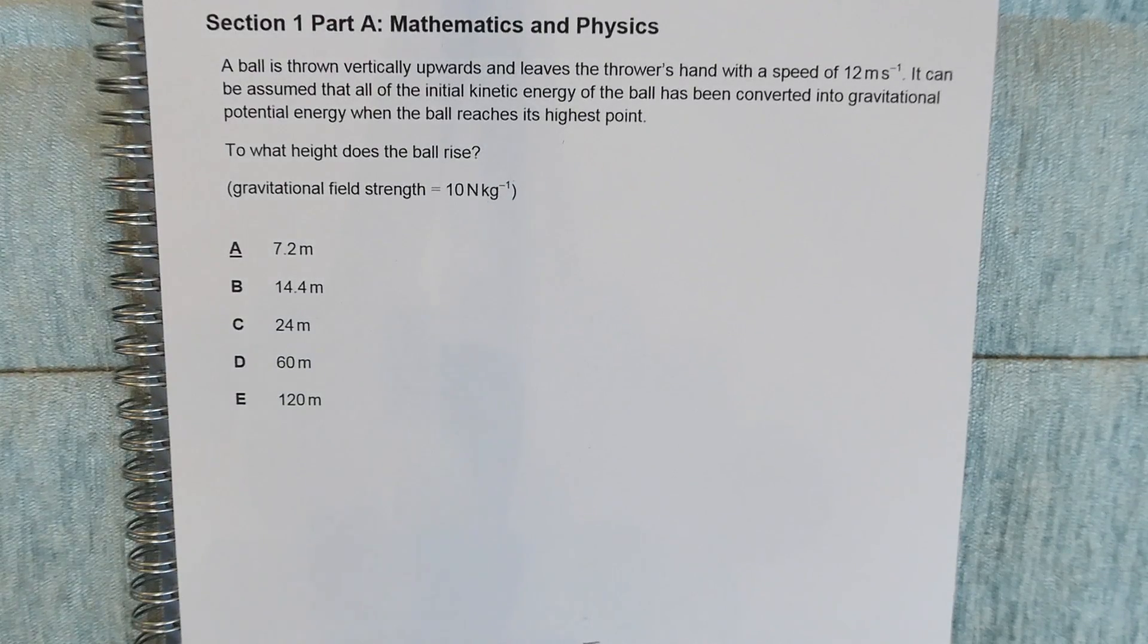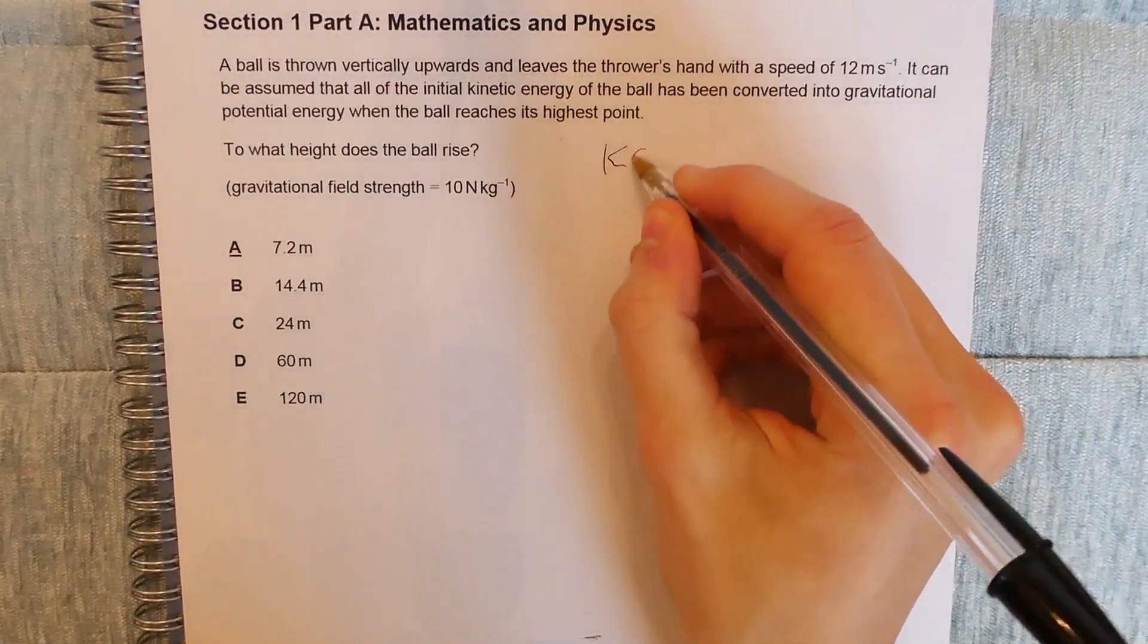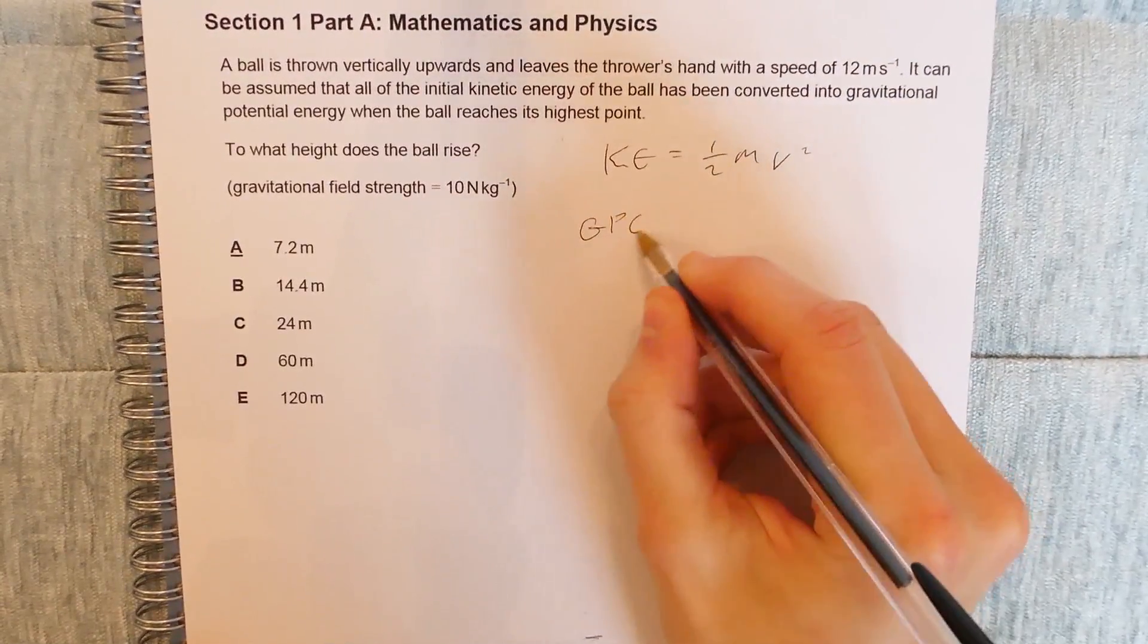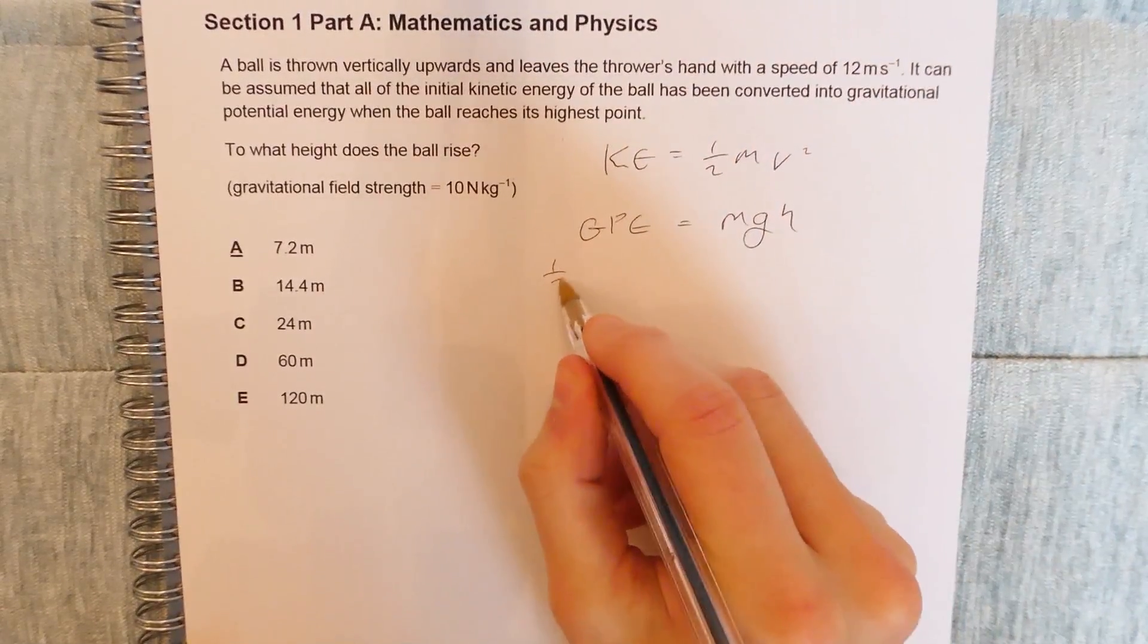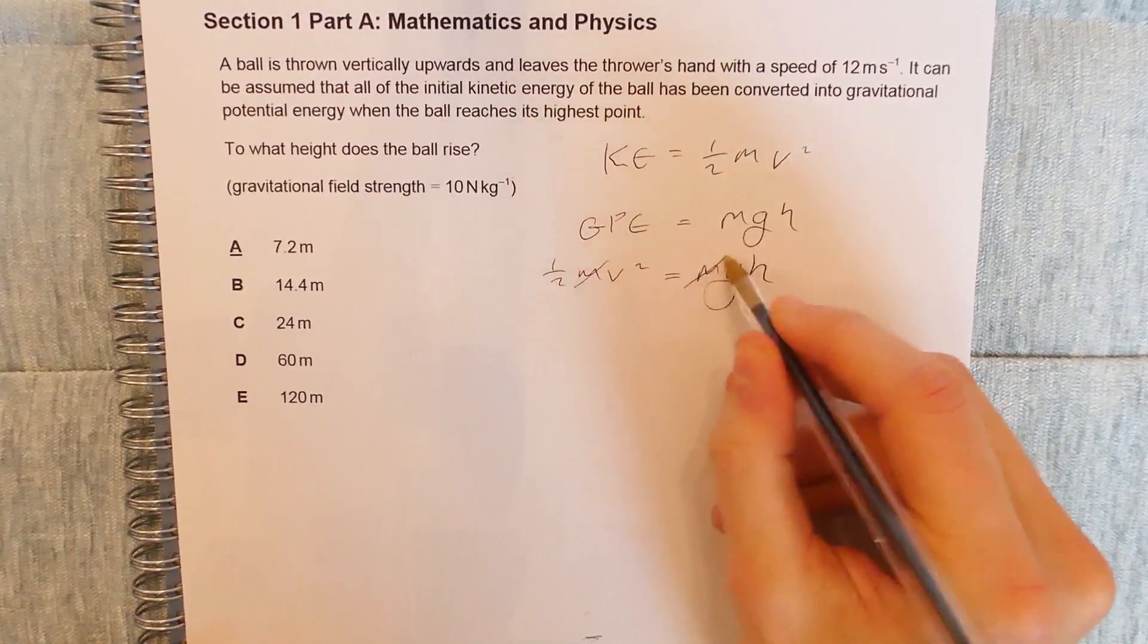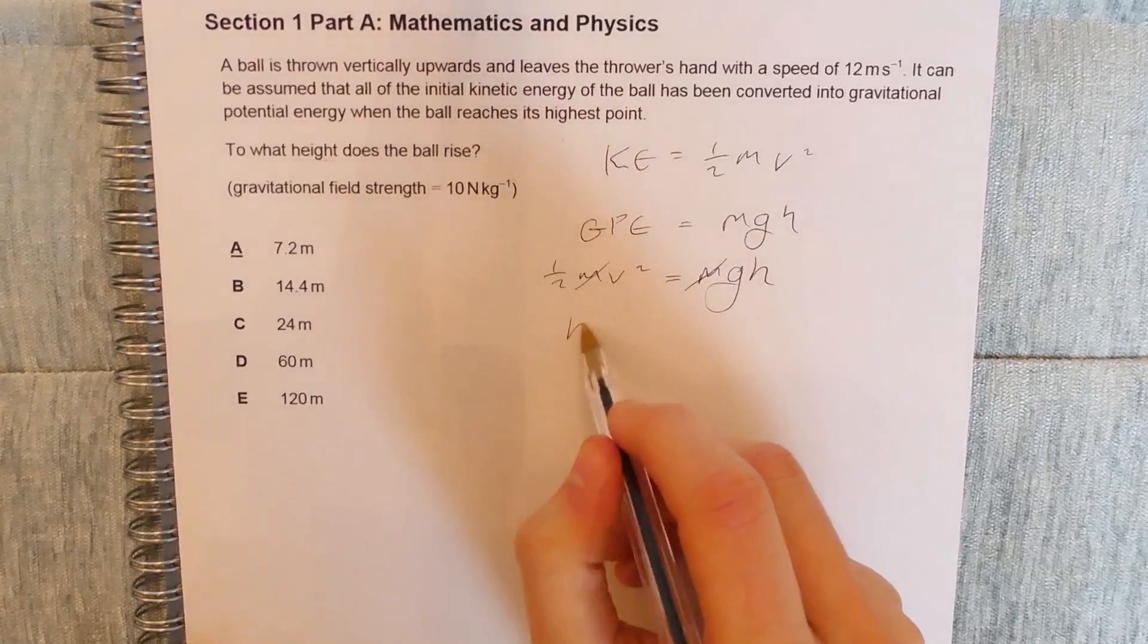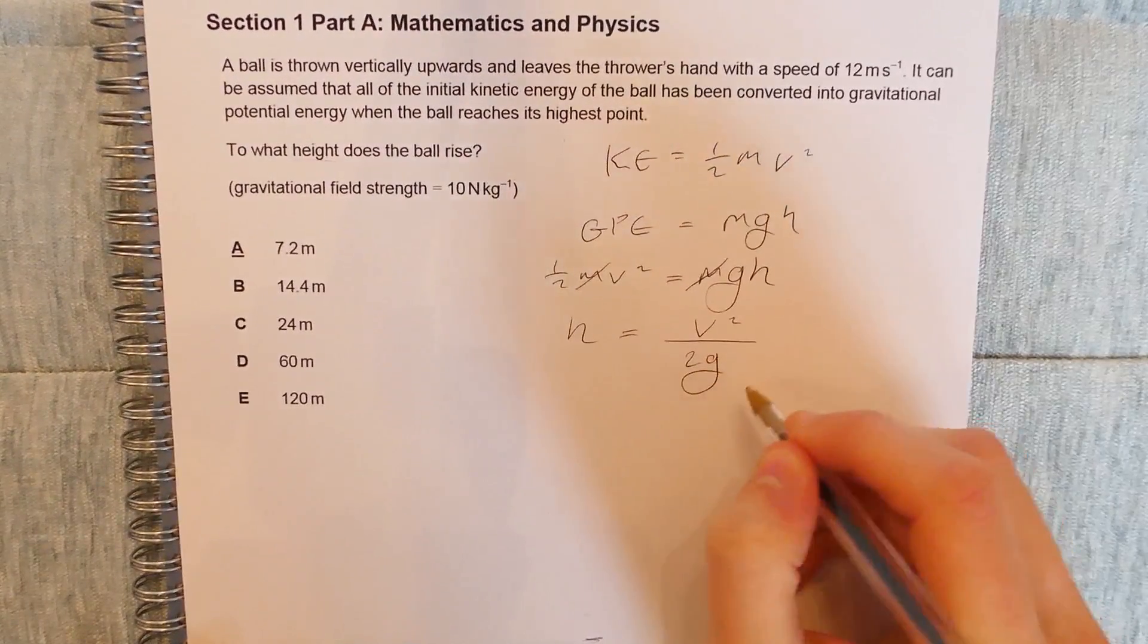So we know that this is probably going to be a conservation of energy problem. In this case we are told that the ball initially has kinetic energy, which is equal to half mv squared, and this is converted into gravitational potential energy, which is equal to mgh. When we set these two equal to each other, as all of the kinetic energy is converted into gravitational potential, we can cancel off the mass and subsequently, as we want to find height, we can rearrange to find that v squared over 2g is equal to h.